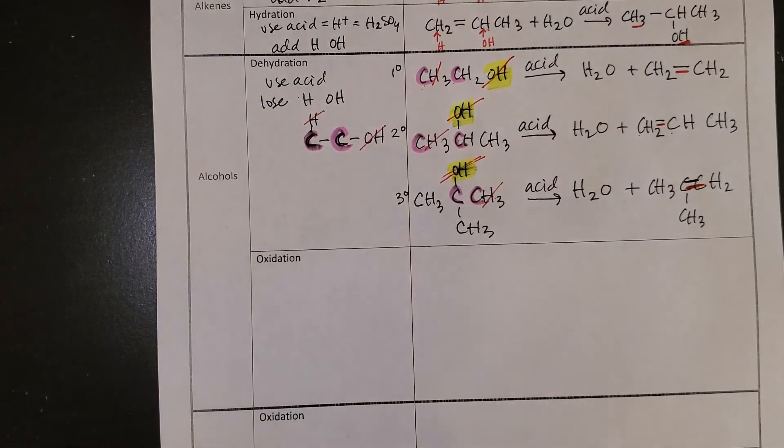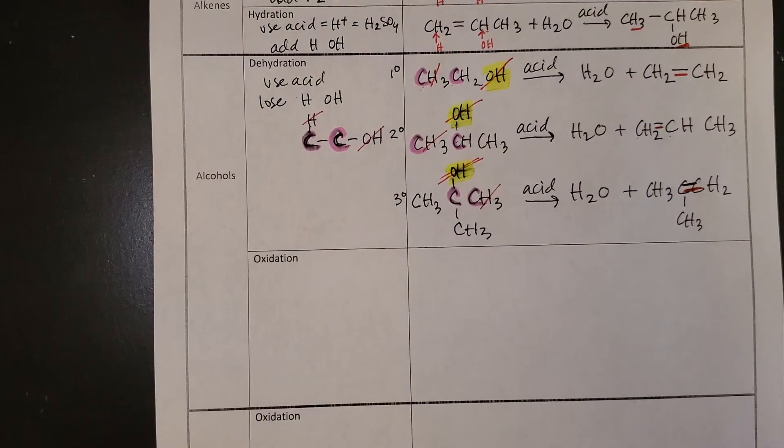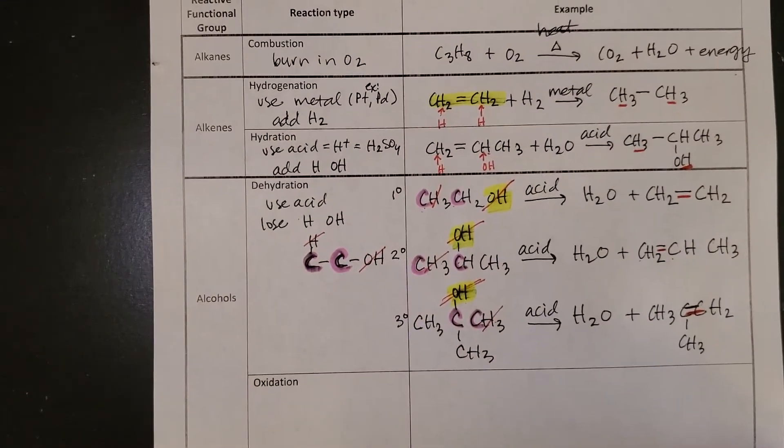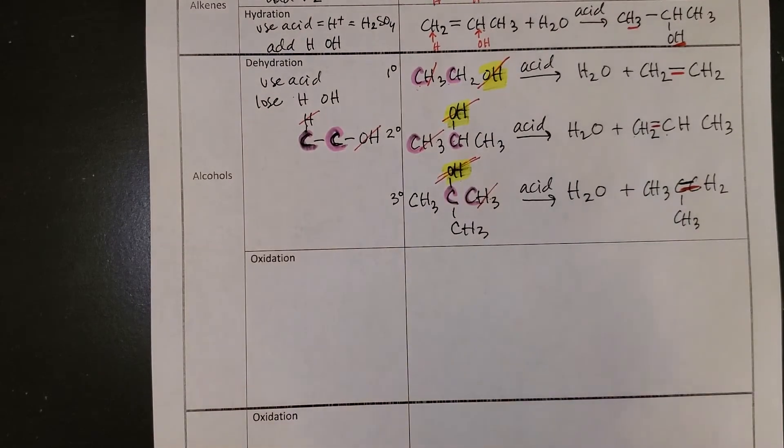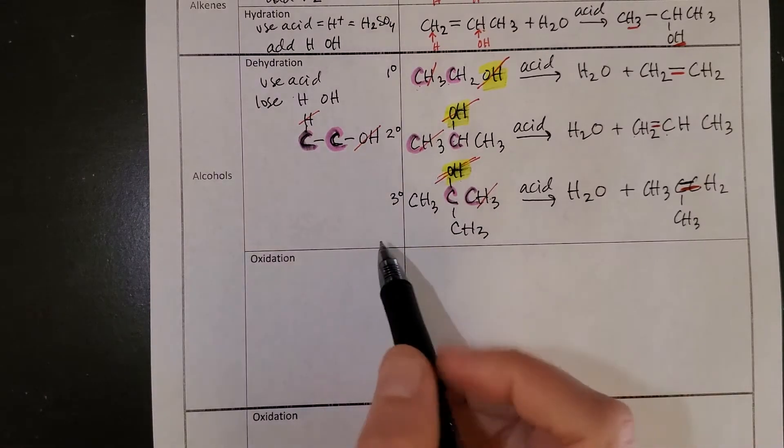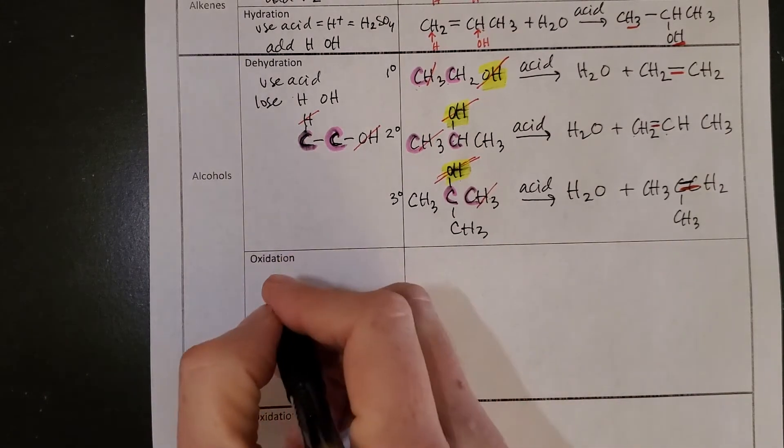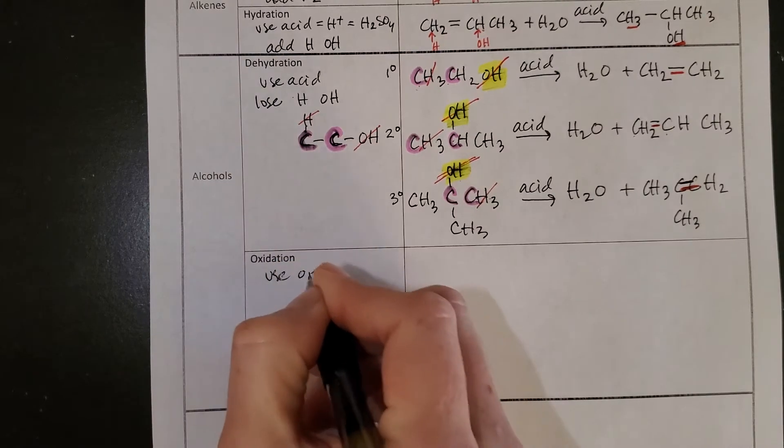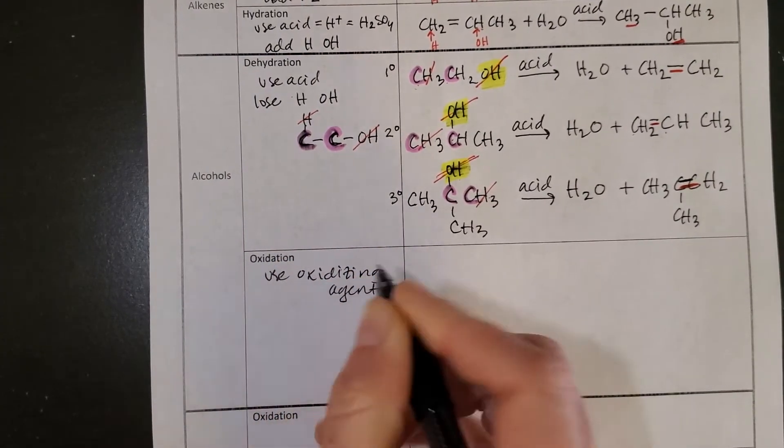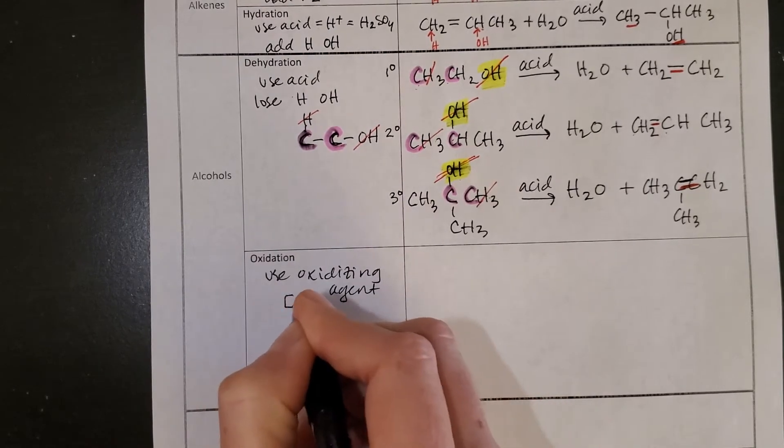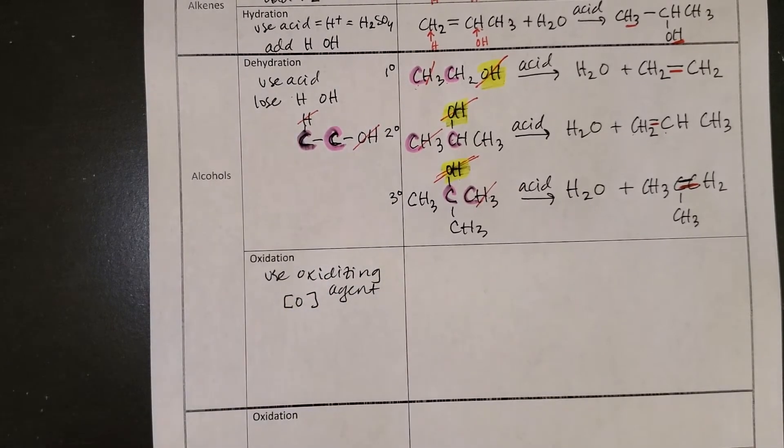So that is taking a look at our alkenes, our alkenes, and some alcohol dehydrations. Next up, we're going to look at alcohol oxidations. Alcohol oxidations are going to be very similar, except for now, we will use an oxidizing agent.